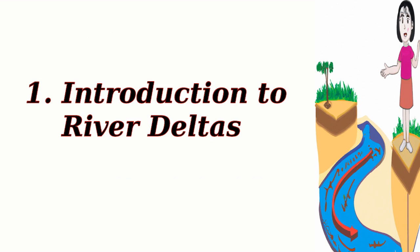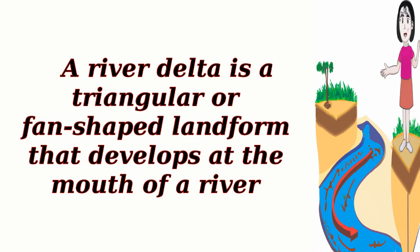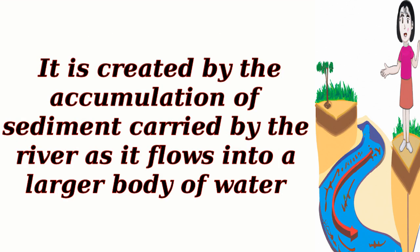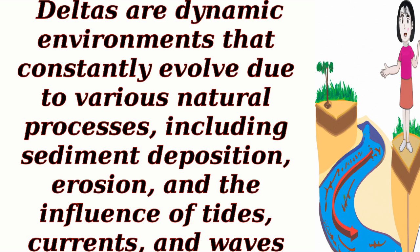1. Introduction to river deltas. A river delta is a triangular or fan-shaped landform that develops at the mouth of a river. It is created by the accumulation of sediment carried by the river as it flows into a larger body of water. Deltas are dynamic environments that constantly evolve due to various natural processes, including sediment deposition, erosion, and the influence of tides, currents, and waves.